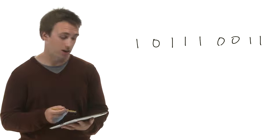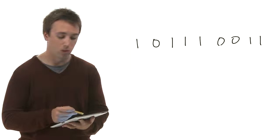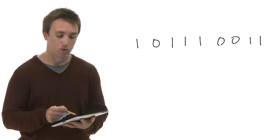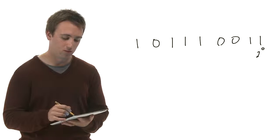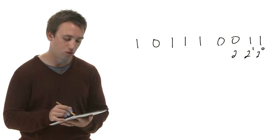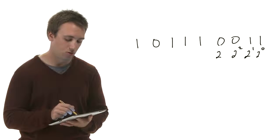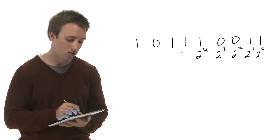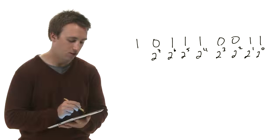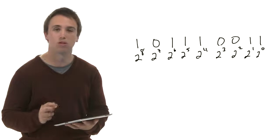Let's take a stab at reading a large binary number and turning it back into decimal notation, since that's what we're used to. This number in binary reads 1 0 1 1 1 0 0 1 1. To figure out its decimal representation, let's start by writing the places under each of the digits. We have the 2 to the 0's place on the far right, followed by the 2 to the 1's place, the 2 to the 2's place, 2 to the 3, 2 to the 4, 2 to the 5, 2 to the 6, 2 to the 7, and finally all the way up to 2 to the 8.